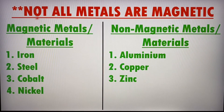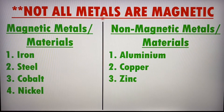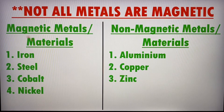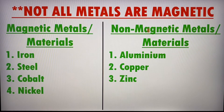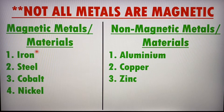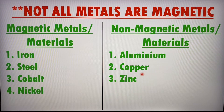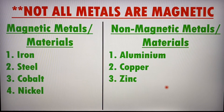This point is very important: not all metals are magnetic. You must remember there are some metals out there that are non-magnetic. Over here we have the magnetic metals — iron, steel, cobalt, nickel — and we also have a group of metals that are non-magnetic: aluminum, copper, and zinc. I put them side by side so you can see the difference. Do remember, not all metals are magnetic.